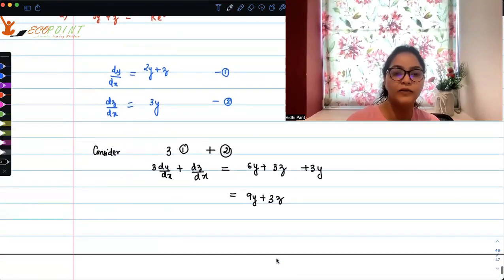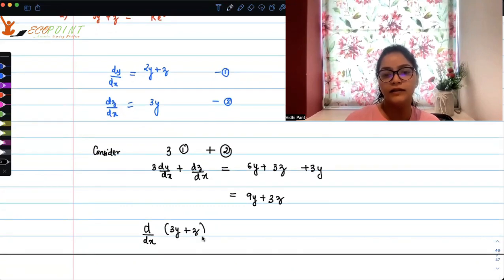Now if you observe, your left hand side is the derivative with respect to x of 3y plus z, isn't it? If you differentiate 3y plus z with respect to x, exactly this is what you will get. And that's equal to 3 times, on your right hand side, 3 times 3y plus z.